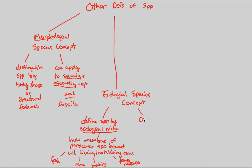Another important feature of the ecological species concept is that it can also be applied to all organisms — sexually reproducing, asexually reproducing, and even fossils — because by looking at fossils we can often determine what they ate and what their hunting patterns were like. One thing you cannot determine through fossils is the ability to interbreed, because these organisms are no longer living. Thus, the biological species concept developed by Ernst Mayr cannot fulfill the fossil or asexual organism role that the morphological and ecological concepts can.